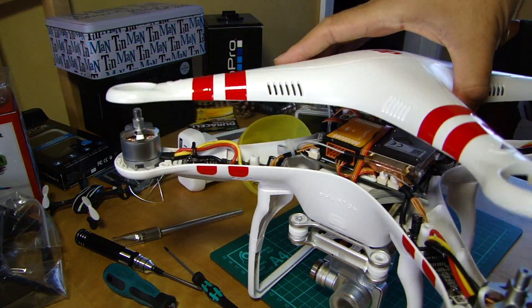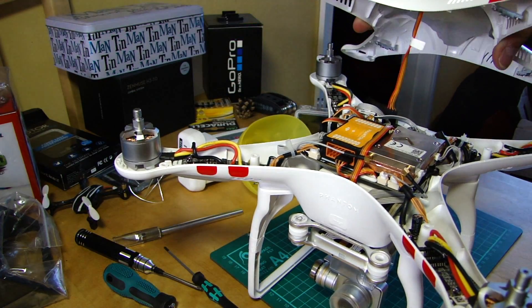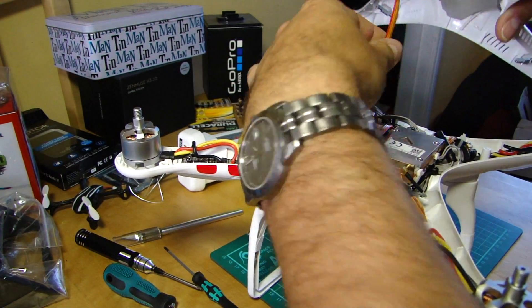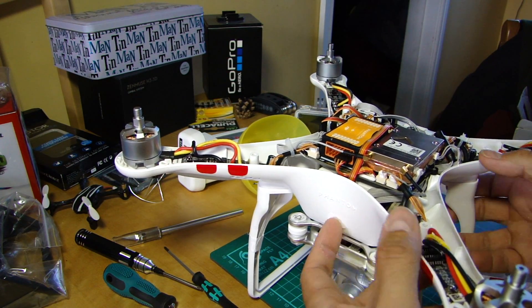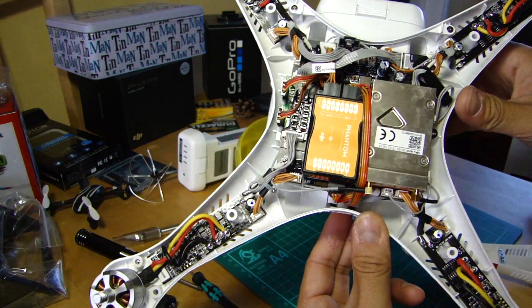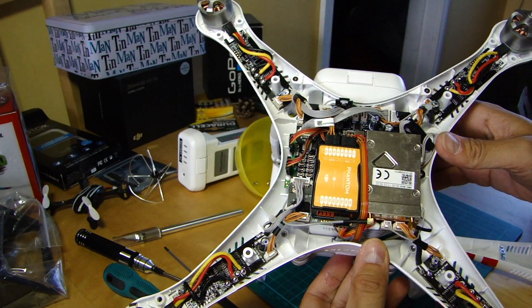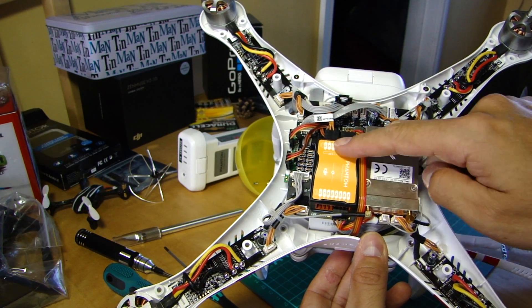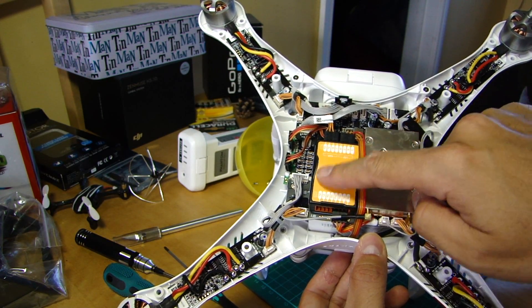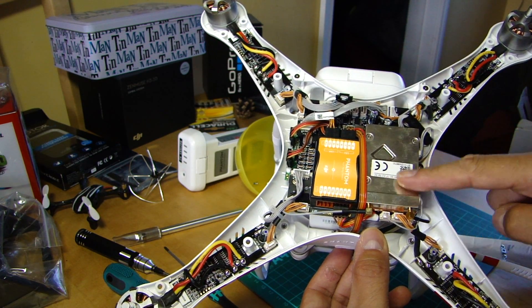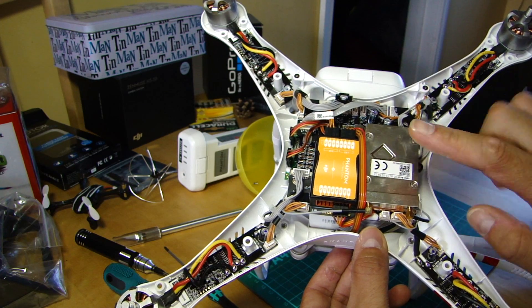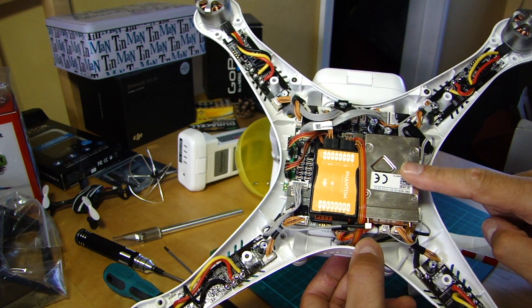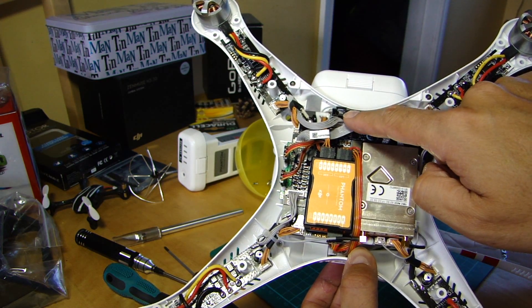We just unplug. So for those of you who have not been in your Vision or Vision Plus before, here it is. Basically you've got the flight controller, the NAZA flight controller. This is your Wi-Fi transmitter module.